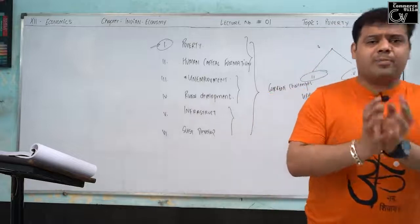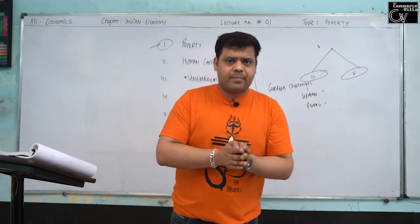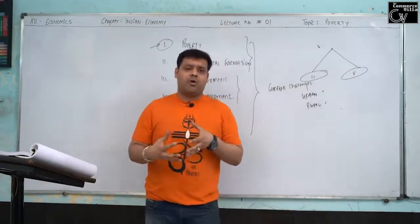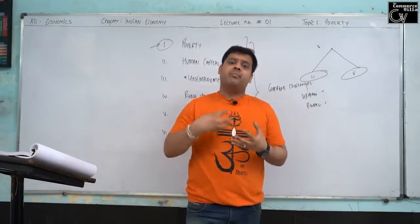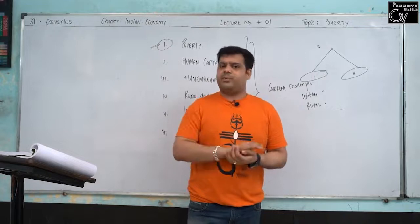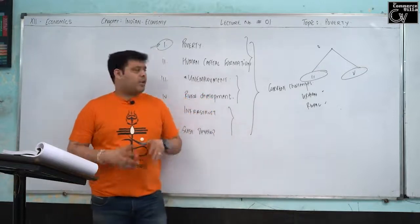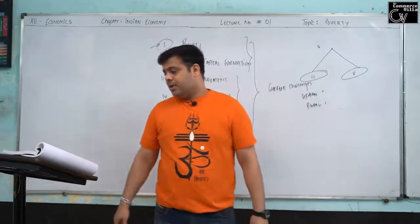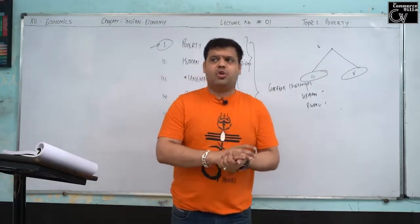So we have covered: who are poor, what is poverty, and categories of poor — urban and rural. The second category depends upon the frequency of poverty in a person's life. This gives us: chronic poor (always very poor), transit poor (sometimes poor, sometimes not), and non-poor (never poor).